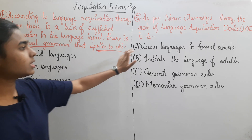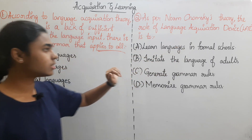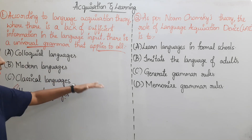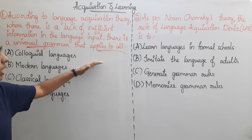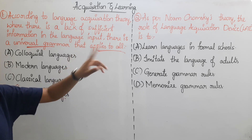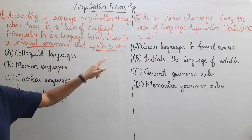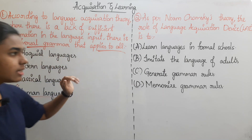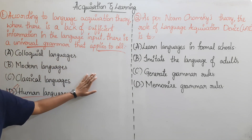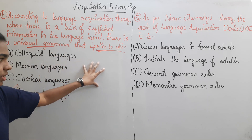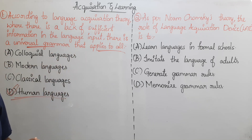So here there are options. Option A: Learn Languages in Formal Schools — using English like first alphabets, words, sentences, paragraphs. If you use any language in formal schools, you can use language acquisition. Option B: Imitate the language of adults — you can imitate a language like teachers, parents, neighbors.